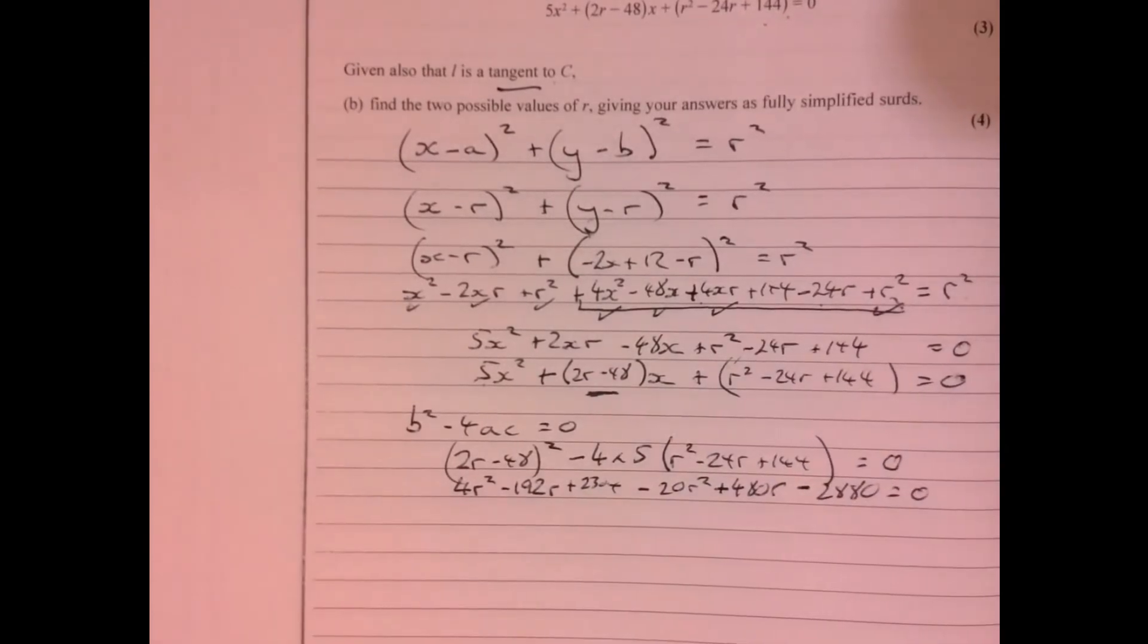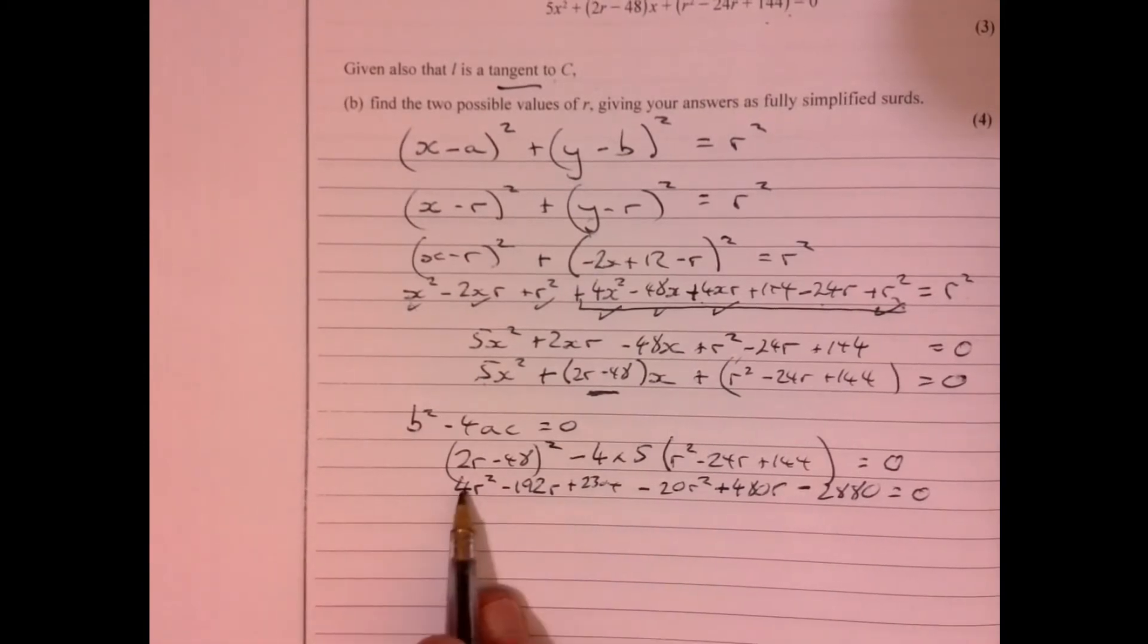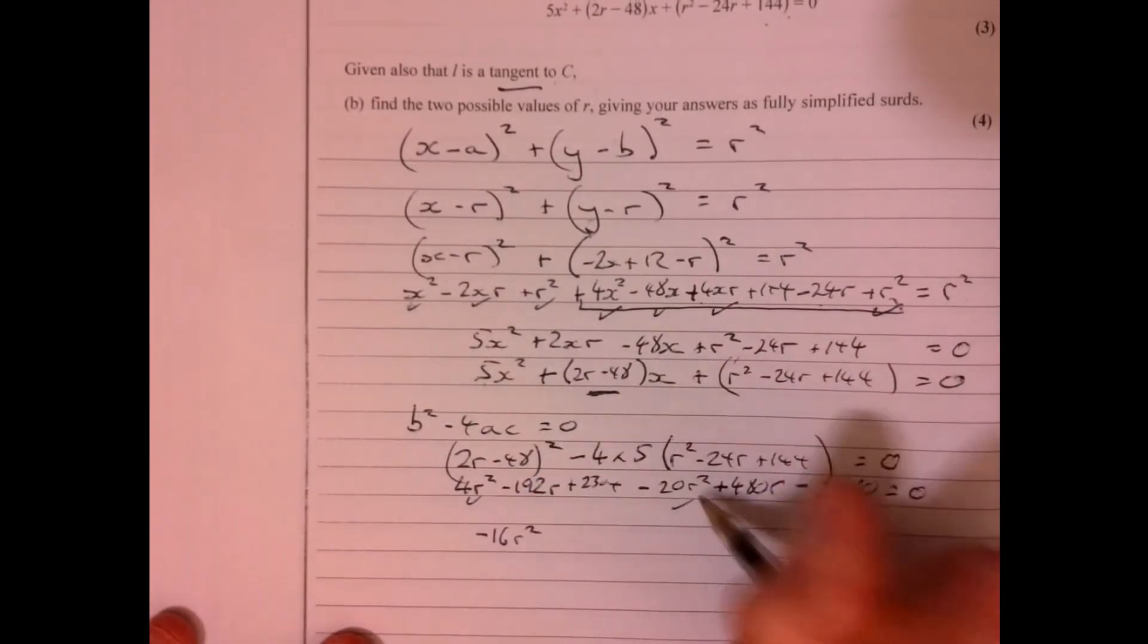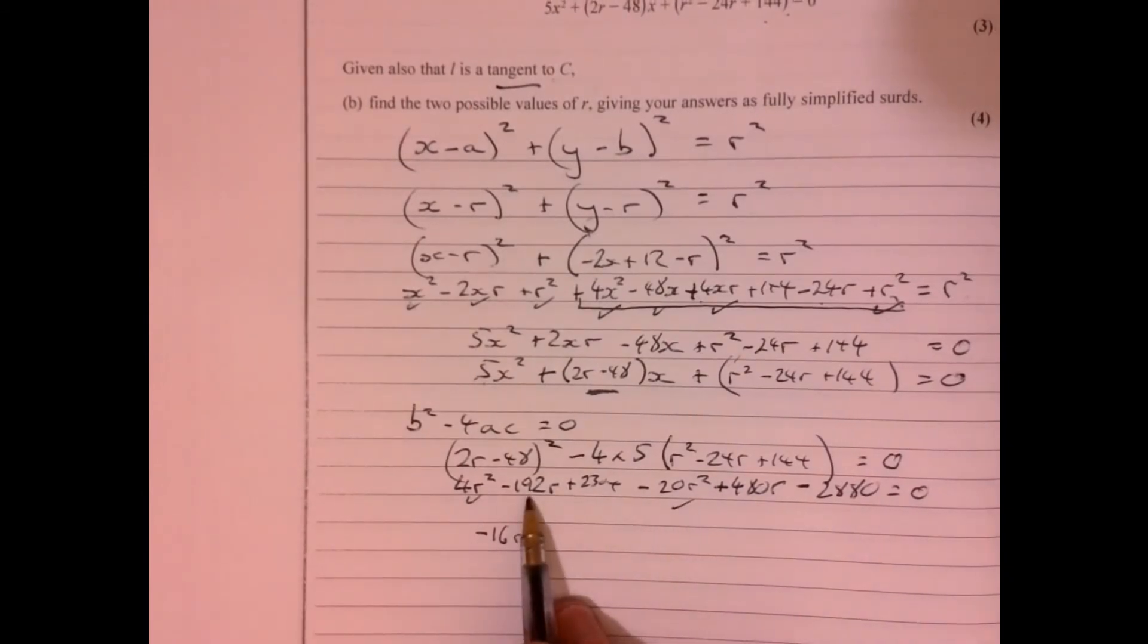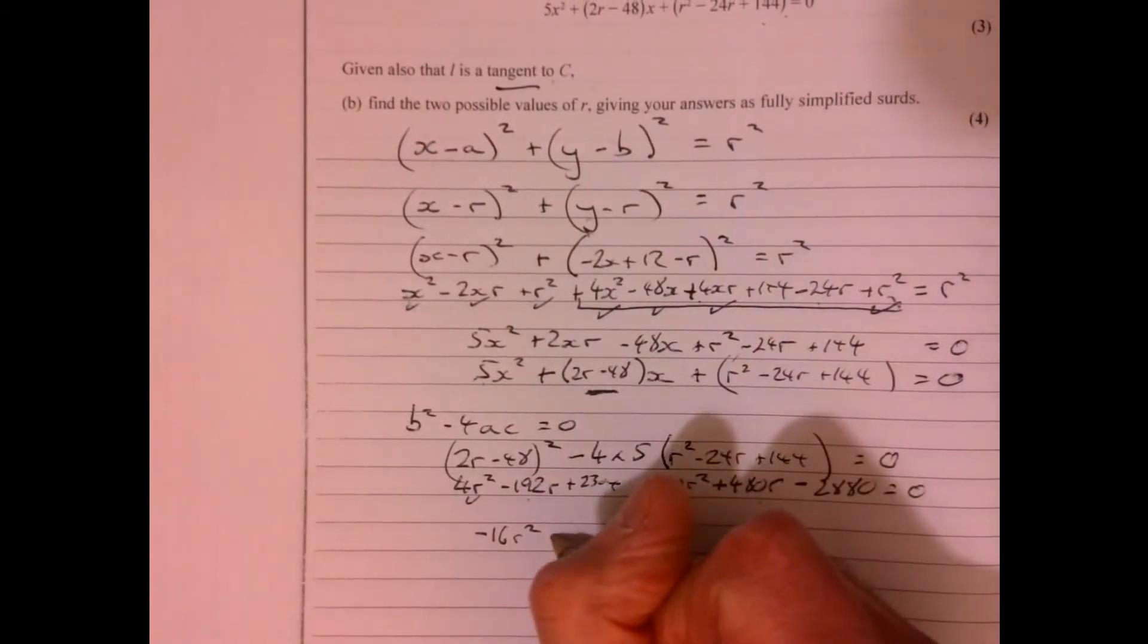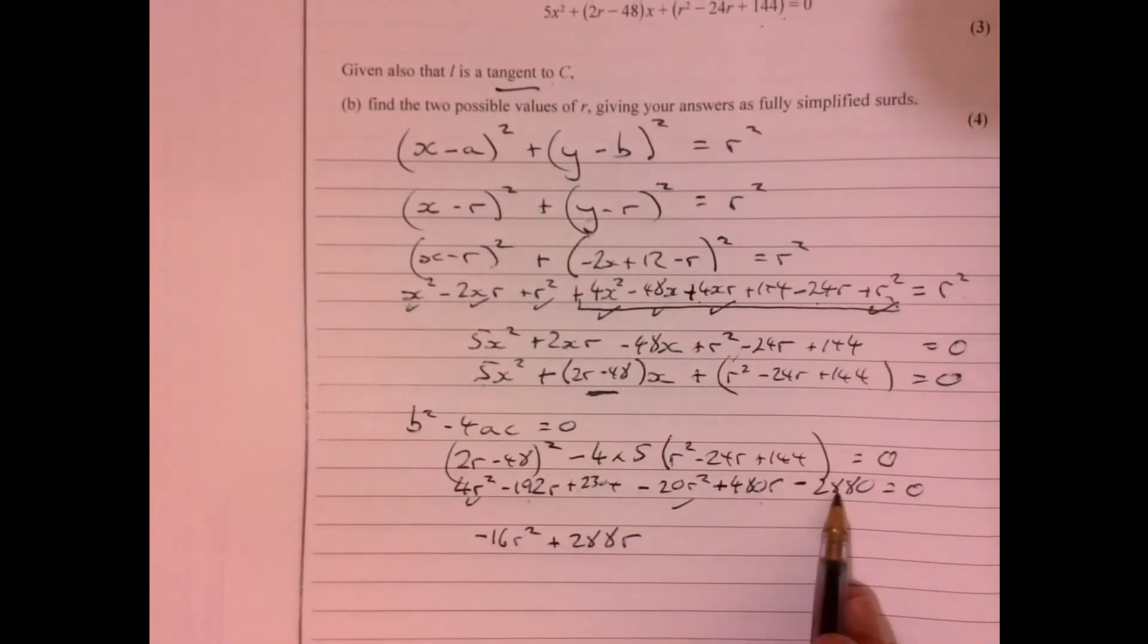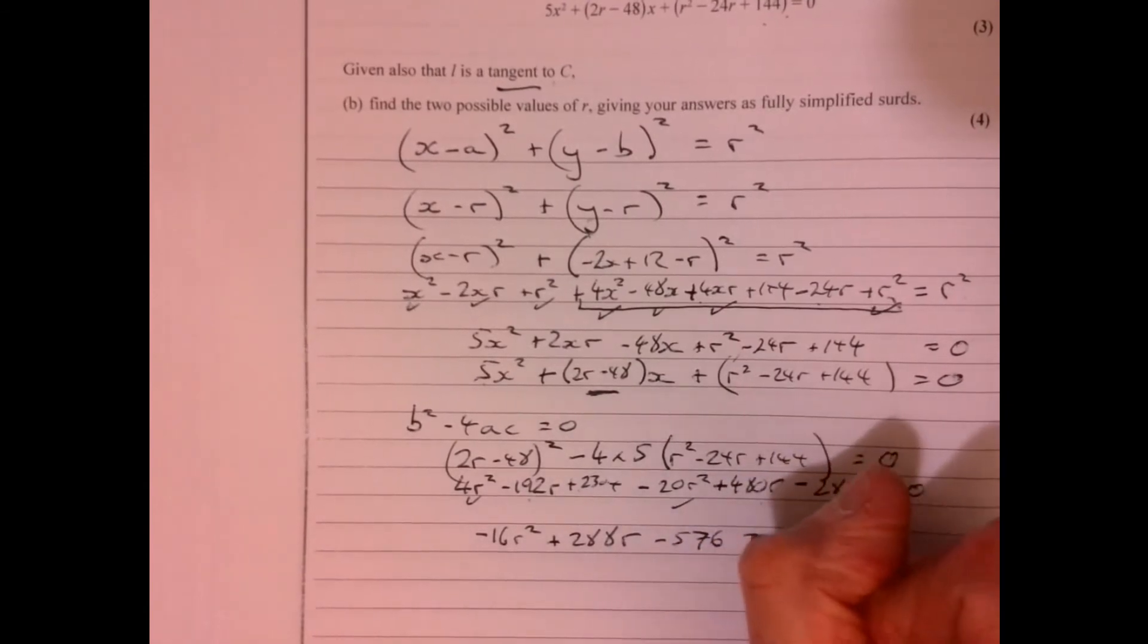And then that equals zero. Right, so again we need to tidy this up. So what does that give us? Minus 16r². So again there's lots of bits, let's just tick them off as we go through. I've got minus 192 plus 480, so that's plus 288r. And then this take away this figure, minus 576 equals zero.